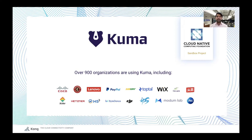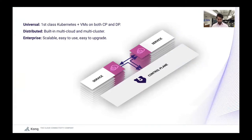Because of the very unique set of features that Kuma provides and its ease of use — yet it's very powerful — today Kuma is being used by over 900 organizations in very important and mission-critical use cases. From a very high-level standpoint, it is a control plane for service mesh. It supports Envoy under the hood, but we don't require any Envoy expertise to use Kuma. Kuma is universal — it's a first-class citizen for both Kubernetes and VMs, but really for any other containerized environment. You could be running Kuma entirely on VMs with no Kubernetes dependency whatsoever.